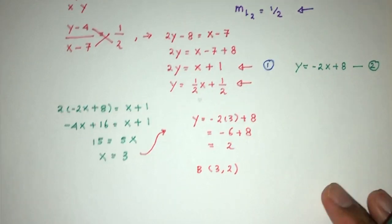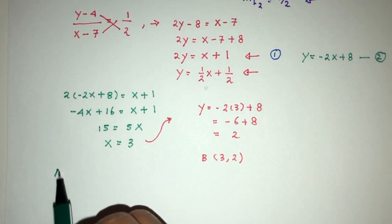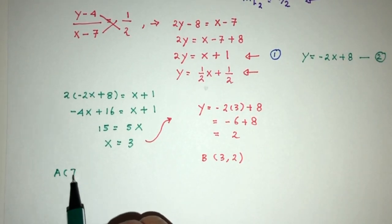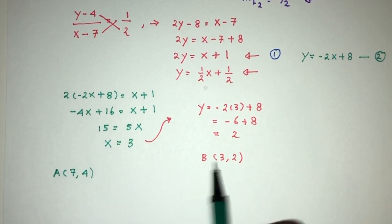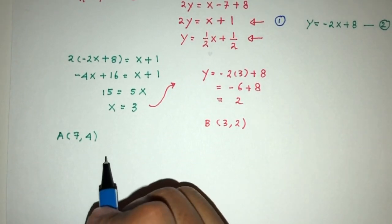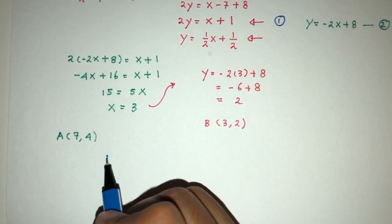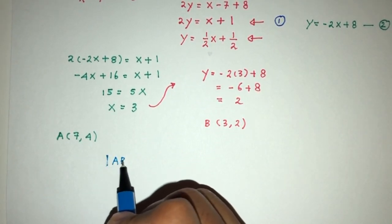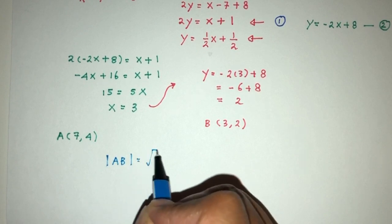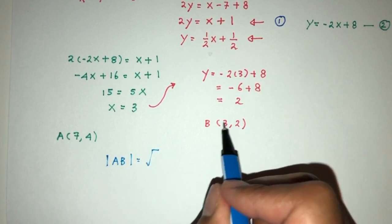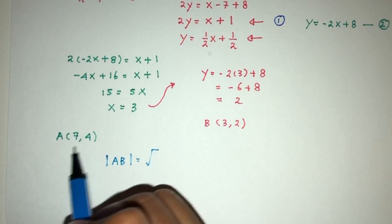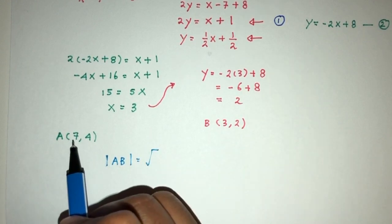So now we have to find the length of AB. A was found to be (7, 4), and B is this. To find the length, obviously, we can just use the formula that we know. The length of AB equals square root of (x2 minus x1), so 3 minus 7, that will be minus 4, squared, that will be 16.